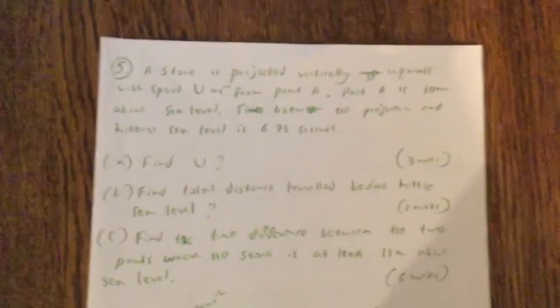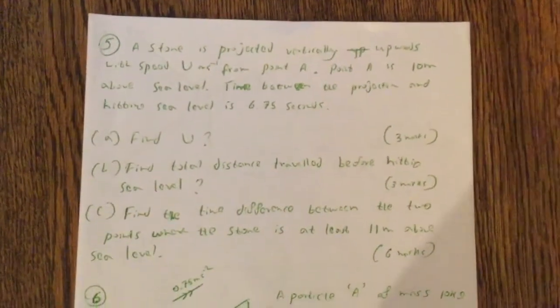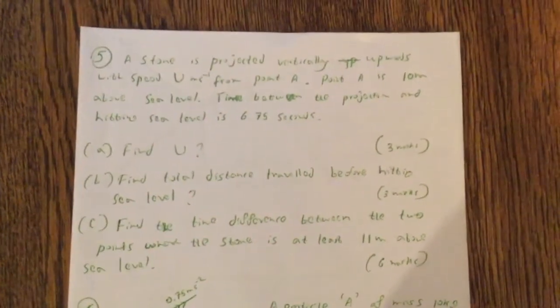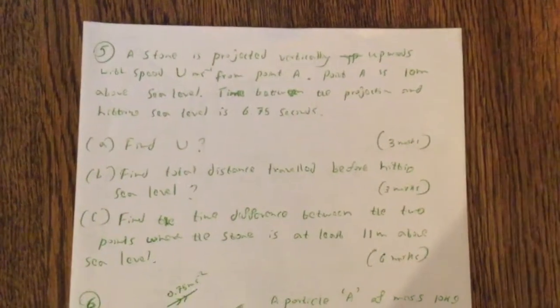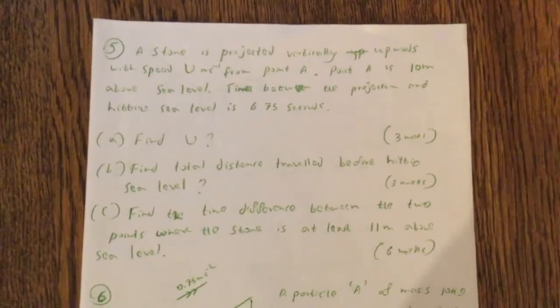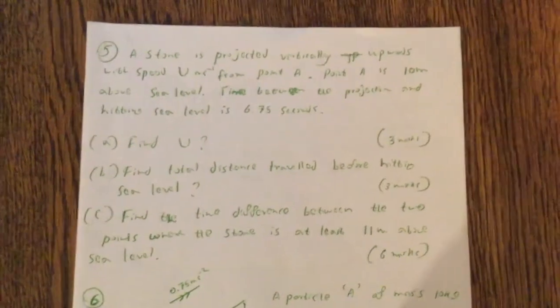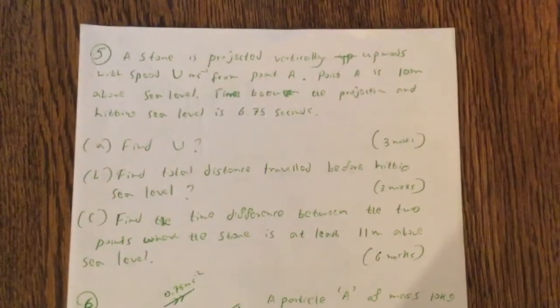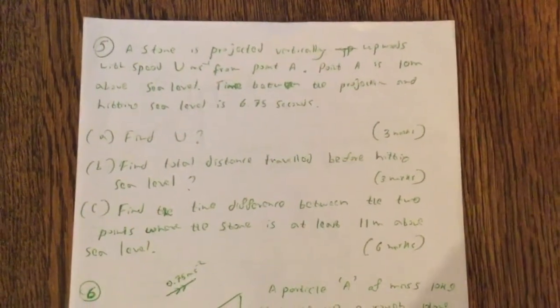Question 5. A stone is projected vertically upwards with speed u meters per second from point A. Point A is 10 meters above sea level. Time between the projection and hitting sea level is 6.75 seconds.